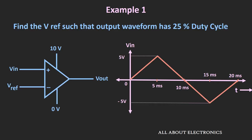If you observe here, this input signal is applied at the non-inverting input terminal of this comparator. Whenever the input signal is greater than the reference voltage, the output of the comparator will be high. And whenever it is less than the reference voltage, the output will be low.